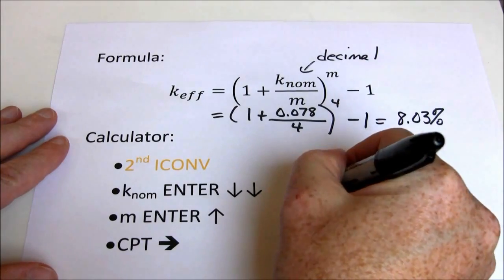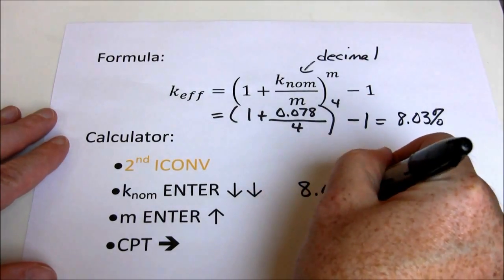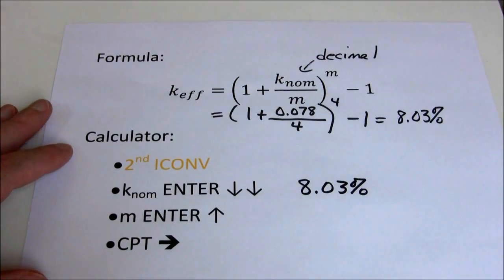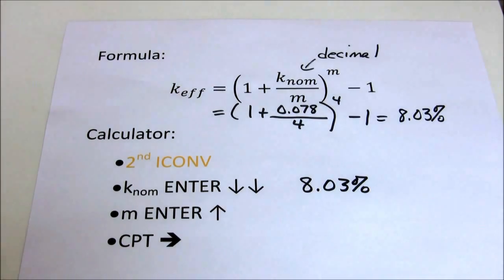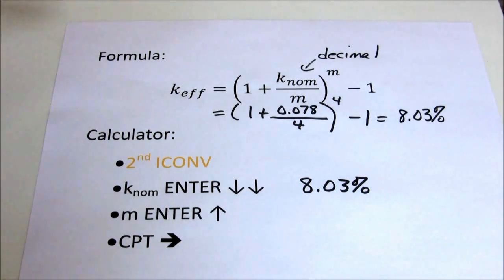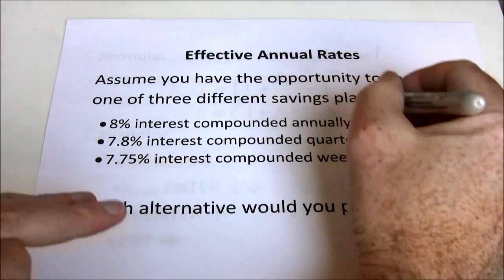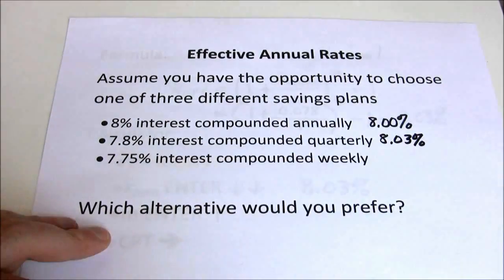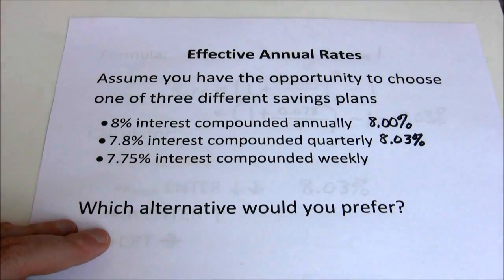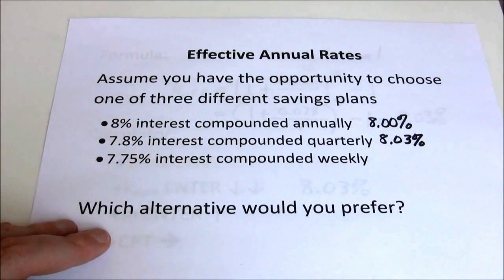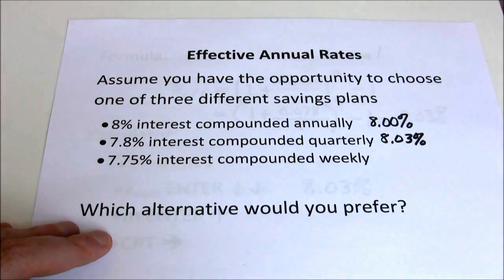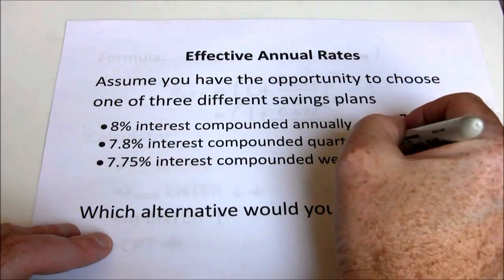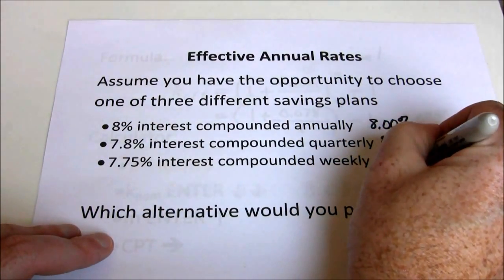I don't care if you use the formula or if you use your financial calculator. If you want to use both you can do that as kind of a verification or a double check. It should come out the same answer either way. So we have 8.03% is our effective rate for 7.8% interest compounded quarterly. For practice I'd like you guys to go ahead and solve for the 7.75% interest compounded weekly. When you do that, you should come up with 8.05%.